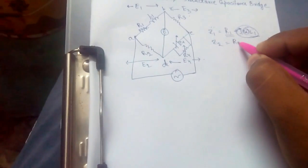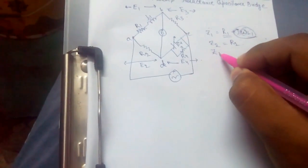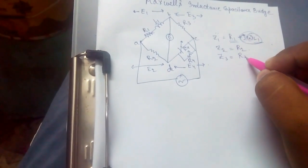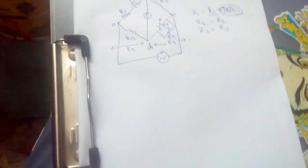Z2 would be R2. Z3 would also be equal to R3. There is no change in the phase of resistance.